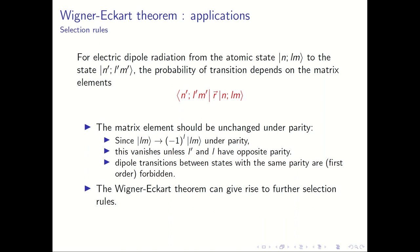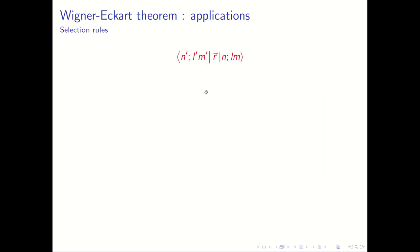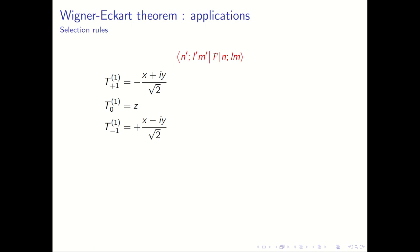Beyond the parity selection rule, there are many more selection rules that come out of the Wigner-Eckart theorem. Not only does it give selection rules, it goes a long way in predicting the intensities of those lines — in fact it can tell you how intense one spectral line is compared to another. So let us remember that this matrix element is what gives you the transition rate or intensity of spectral lines.